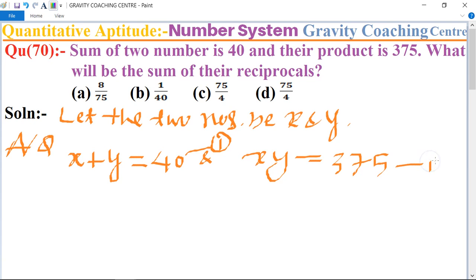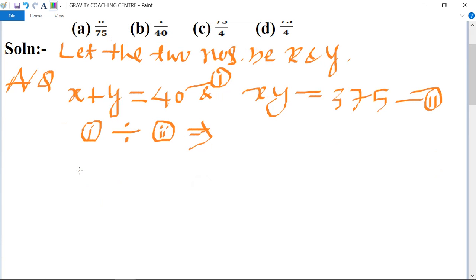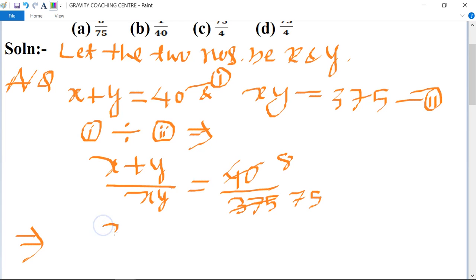This is the first equation and this is the second equation. Now we divide equation first by equation second, so we get (x + y) upon xy equal to 40 upon 375.